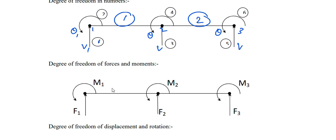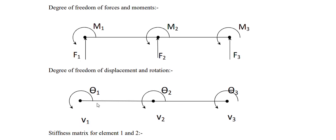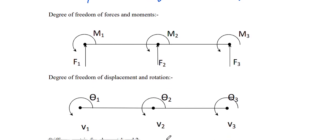There will be vertical movements at each node and moments at each node: M1, M2, M3 and F1, F2, F3. For displacement, as already mentioned: V1, theta 1; V2, theta 2; V3, theta 3. You can mention all these in the same diagram or separately for forces, moments, displacements, and reactions.